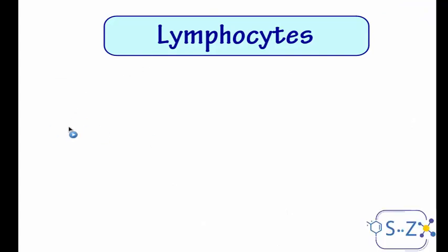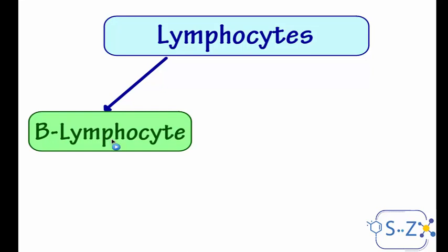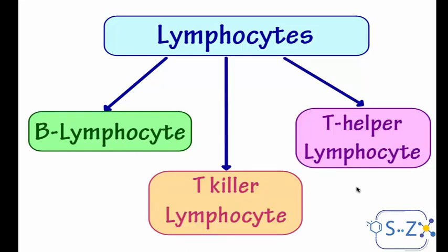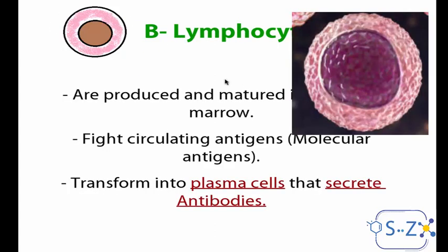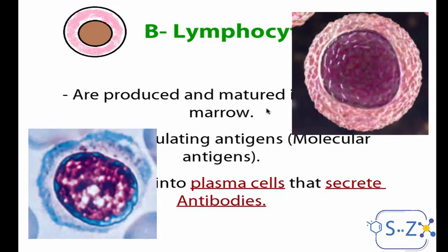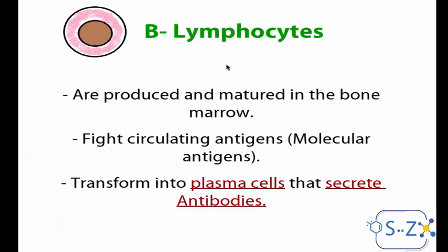The lymphocytes are a large family of cells. There are three main types: the B lymphocyte, the T killer lymphocyte, and the T helper lymphocyte. The B lymphocytes are circular in shape with a round nucleus, and they are produced and matured in the bone marrow. Maturation teaches the immune cell what is 'self' and what is 'non-self' — who is friend and who is enemy. B lymphocytes learn self and non-self inside the bone marrow, and they fight circulating or molecular antigens and can transform into plasma cells that secrete antibodies.